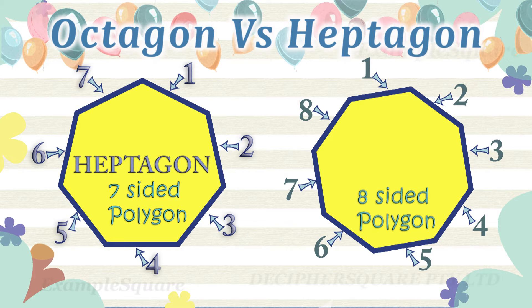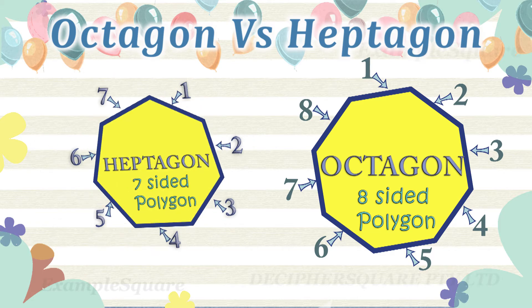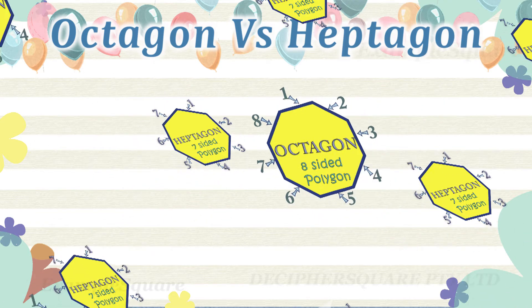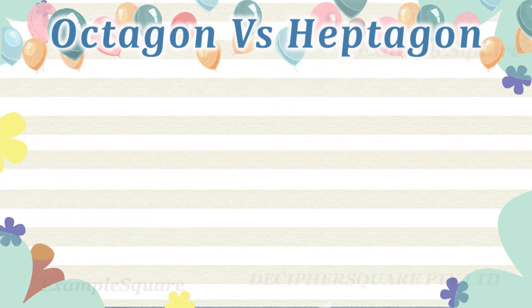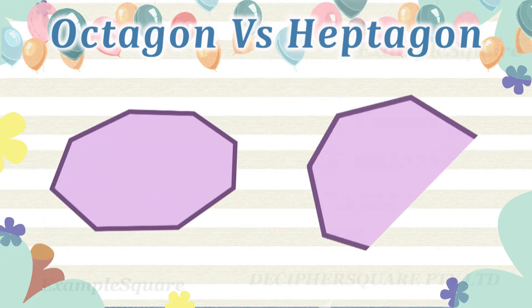This is an octagon. A polygon is a two-dimensional closed shape having three or more straight sides. Here is another example.